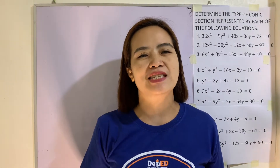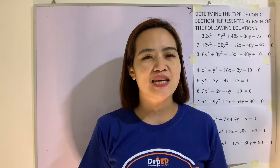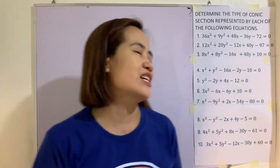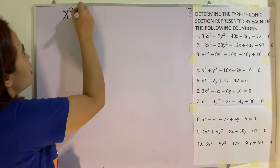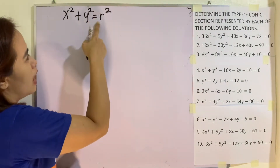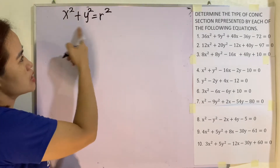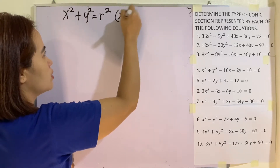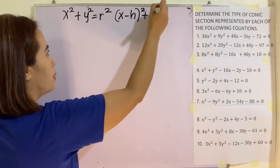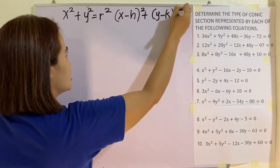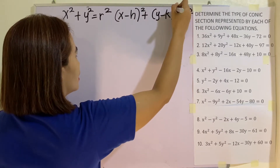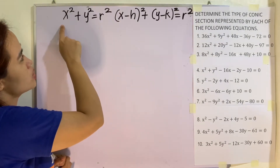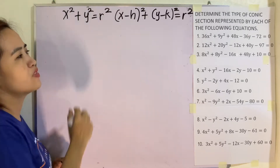Our topic for today is recognizing the equation and important characteristics of the different conic sections. Let us recall first the equations of these conic sections. We have x squared plus y squared is equal to r squared. Our r here is the radius and the center is at the origin. If our center is not at the origin, we will be using the formula: quantity x minus h squared plus quantity y minus k squared is equal to r squared. Take note that we cannot see any numerical coefficients of x squared and y squared here. So this is exclusively for the circle.